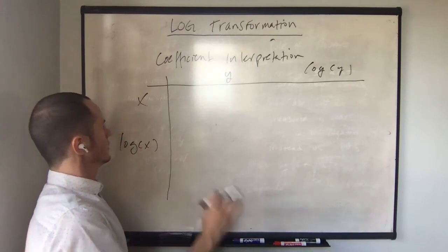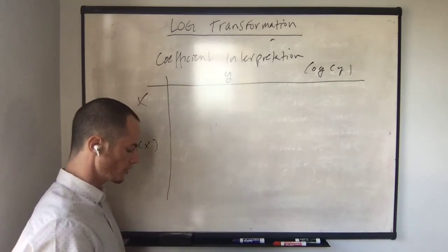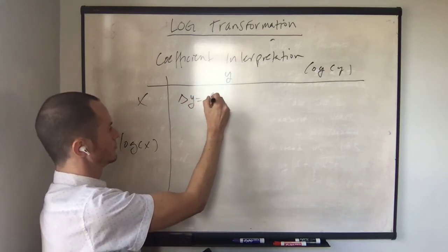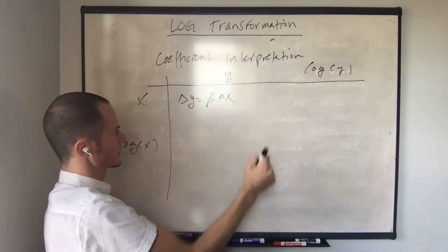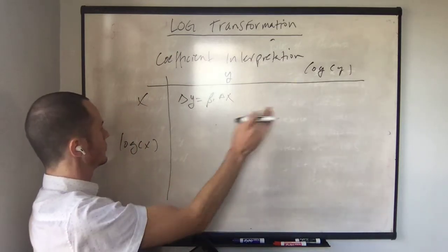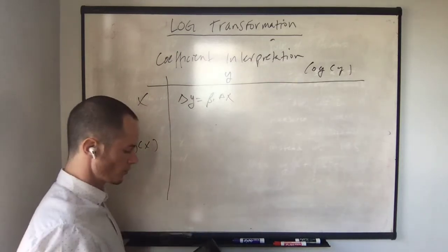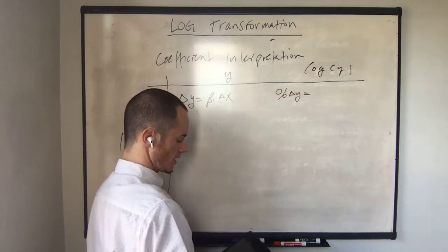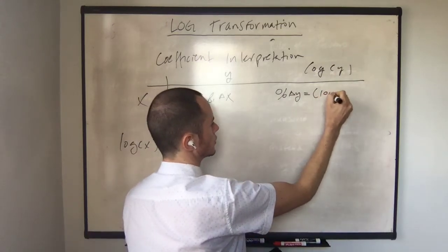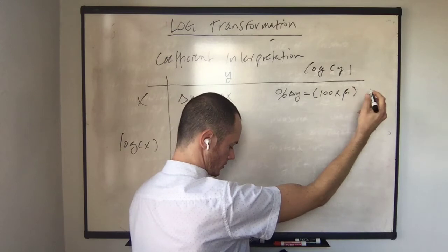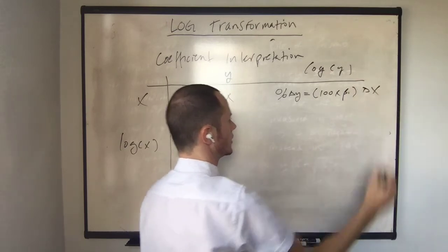For the case of x and y, both in their original form, change of y is given by beta 1 change in x. For the case of log of y, but x in its original form, the percent change in y is given by 100 times beta 1 change in x.